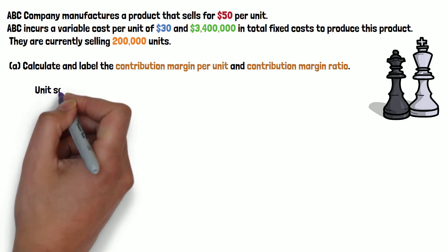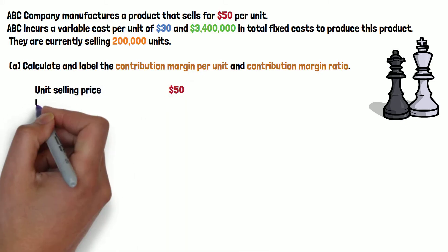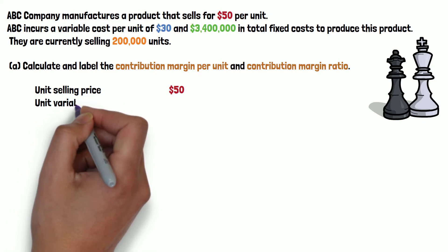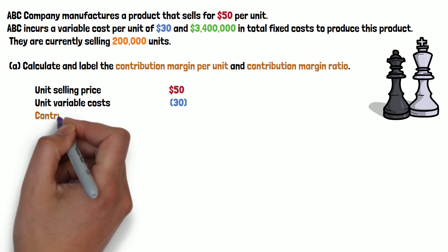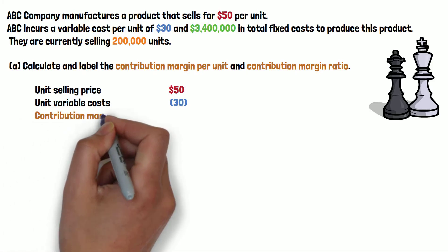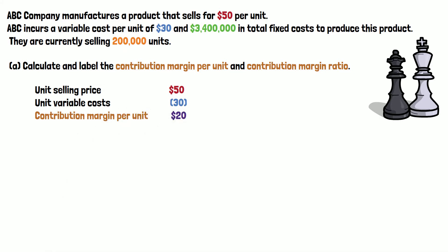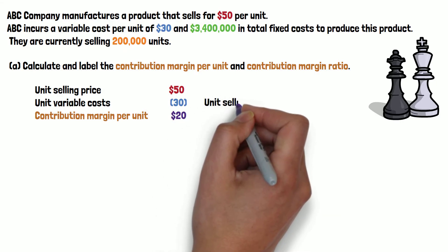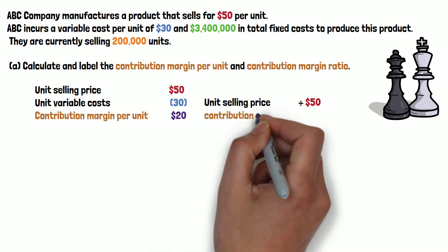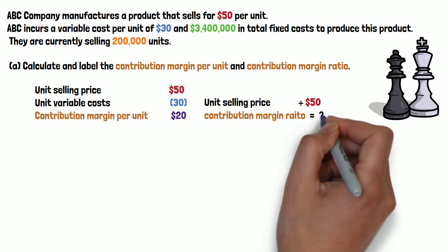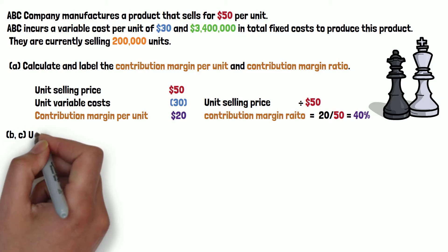The unit selling price is $50 and the unit variable cost is $30. The difference is the contribution margin per unit, which is $20. To calculate the contribution margin ratio, we use contribution margin per unit divided by selling price: $20 divided by $50 equals 40 percent.